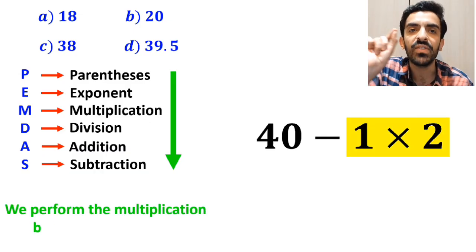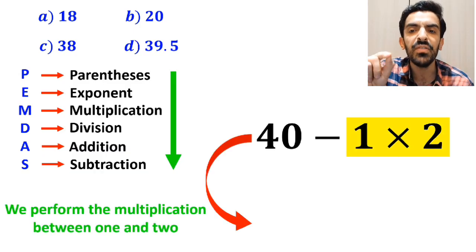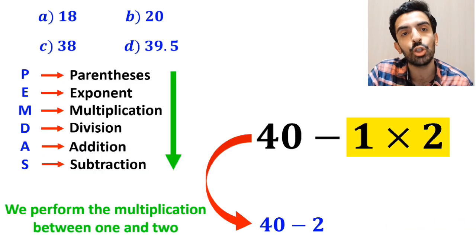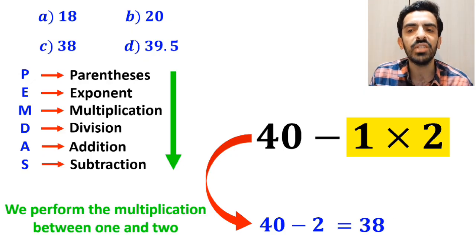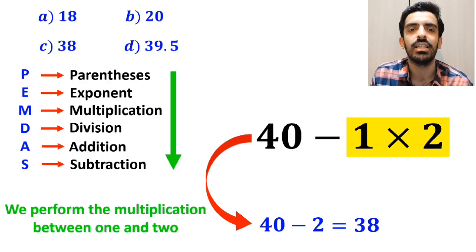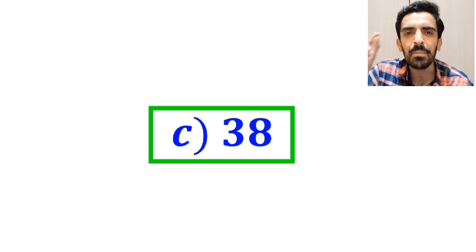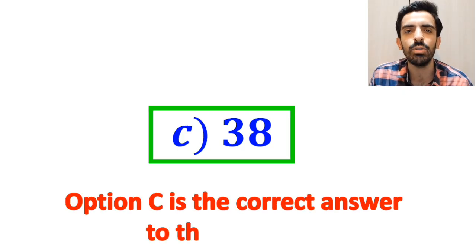In the final step, we perform the multiplication between 1 and 2, which simplifies the expression to 14 minus 2. And finally, the value of this expression is 12. Wait — the expression simplifies to 40 minus 2, giving a final value of 38. Therefore, option C is the correct answer to this question.